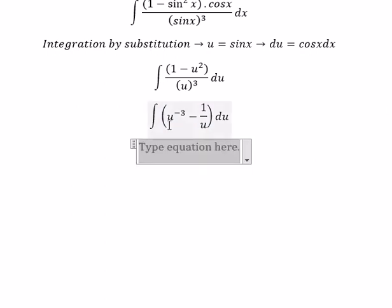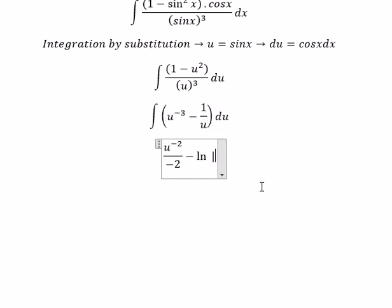Next, the integral of this one gives you u to the power of negative 2 over negative 2. This one gives you ln of the absolute value of u.